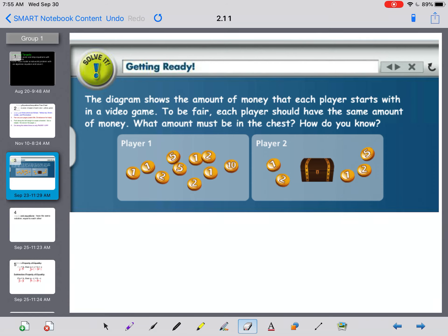On your practice example here, the diagram shows the amount of money that each player starts with in a video game. To be fair, each player should have the same amount of money. What amount must be in this chest to make these two amounts equal, and how do you know?